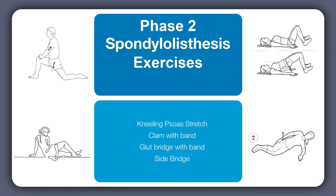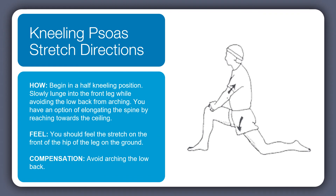The phase two spondylolisthesis exercises are the kneeling psoas stretch, the clam with band, the glute bridge with band, and the side bridge. For the kneeling psoas stretch, come into a kneeling position with the knee underneath the hip and the other knee just above the ankle. Then gently shift the weight slightly forward so the front knee comes out over the toes and you feel a stretch through the front of the back thigh.